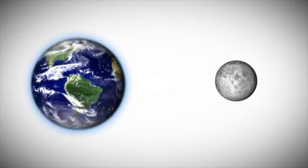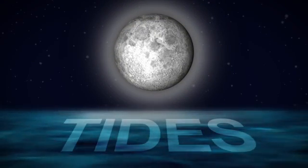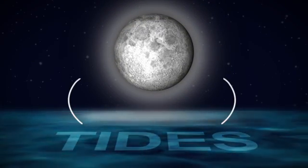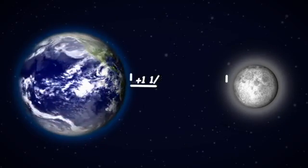As the Moon orbits the Earth, its gravity pulls on the oceans, causing tides. And as the tides pull on the Moon, they cause it to move about an inch and a half away from the Earth each year.